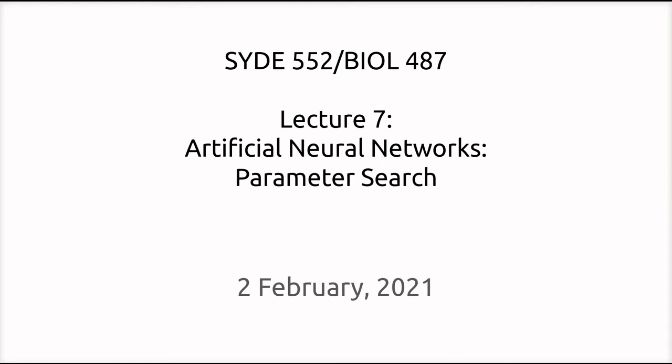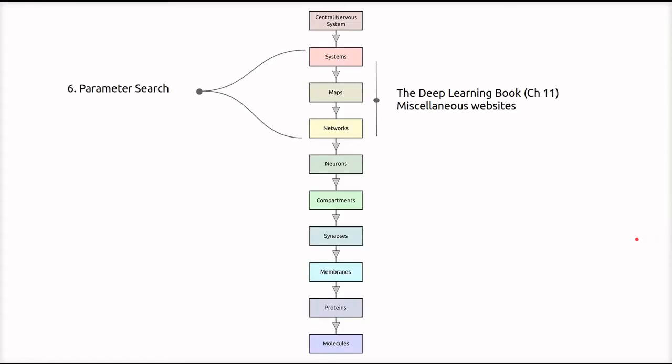Hello, and welcome back to SYD552, Computational Neuroscience. This is Lecture 7 on Parameter Search for Artificial Neural Networks. In the scheme of the course, we're still dealing at a higher level of abstraction, but primarily we're looking at networks.